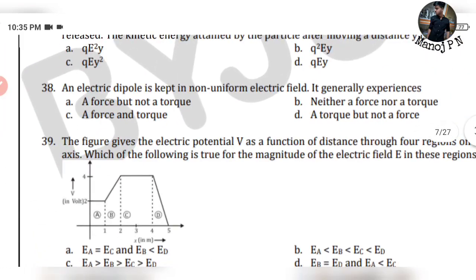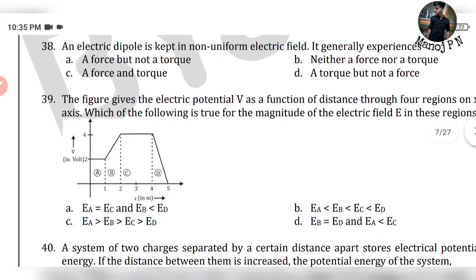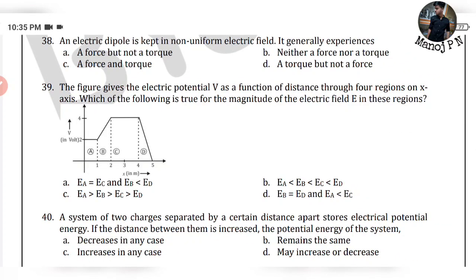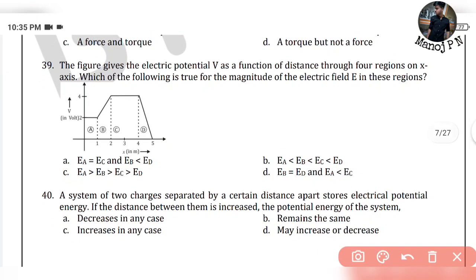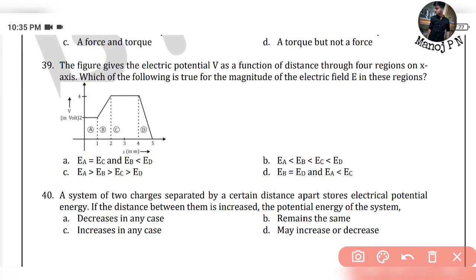38th question: An electric dipole is kept in a non-uniform electric field. It generally experiences a force and torque — Option C. 39th question: The figure gives electric potential V as a function of distance through 4 regions on the x-axis. Where the potential is constant, the electric field E is zero. Comparing regions, Eb is less than Ed. Option A is your answer.